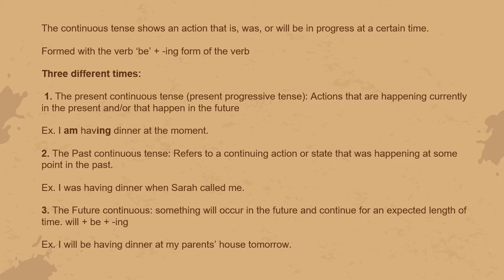The third is future continuous. As the name suggests, it's when something occurs in the future and continues for an extended length of time. It's formed by adding will plus be plus the ing-form of the verb. For example, 'I will be having dinner at my parents' house tomorrow' — so we have will plus be plus the ing-form of the verb 'have'.